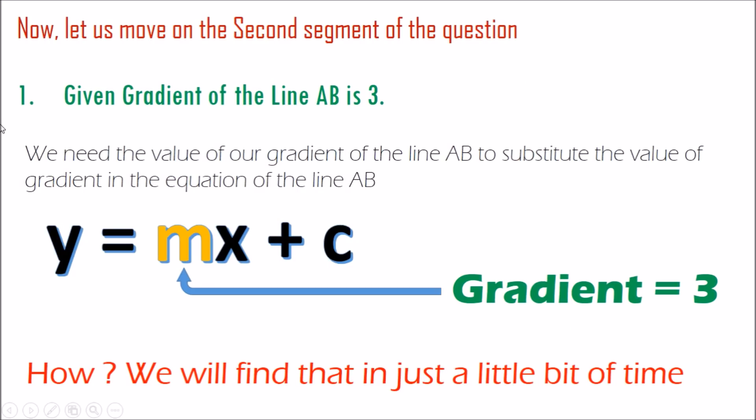Now let's move to the second segment of our question: the given gradient of line AB is 3. Why do we need the value of gradient to find the y-intercept? We need the gradient so we can substitute it into the equation of the line along with the values of x and y in order to find the value for y-intercept, because in the equation y = mx + c, M stands for the value of gradient.